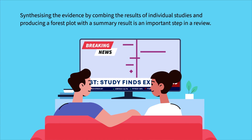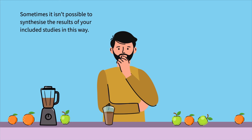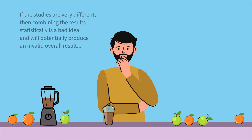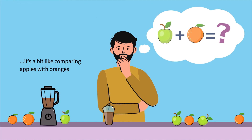Synthesising the evidence by combining the results of individual studies and producing a forest plot with a summary result is an important step in a review. This is then followed by interpreting the result and making the result available for others. Sometimes it isn't possible to synthesise the results of your included studies in this way. If the studies are very different, then combining their results is a bad idea and will potentially produce an invalid overall result. It's a bit like comparing apples with oranges.